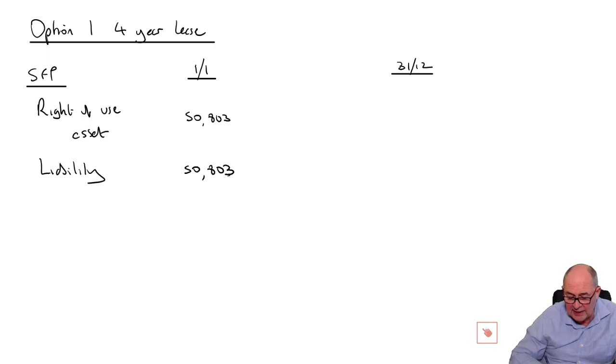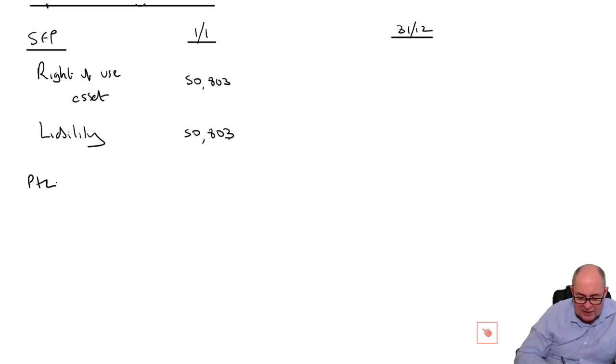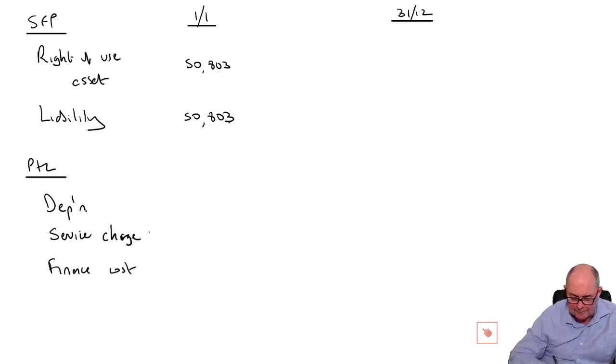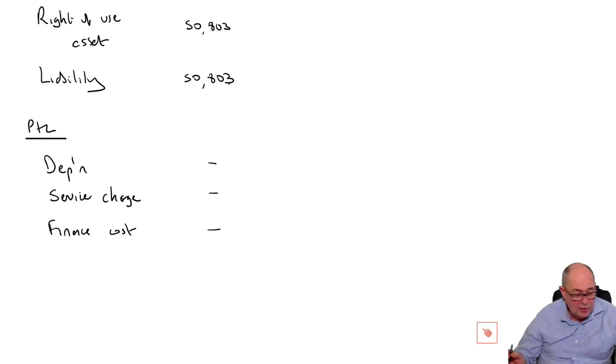In the SoFP, if they go down the leasing route, the long-term lease route, they'll be recognizing a right of use asset, which would be part of non-current assets, and a lease liability. No calculations. It tells us that the actual present value of the lease payments is 50,803. By the time you get to the end of the year, you've got the profit and loss. In the profit and loss, you would normally expect to see depreciation and a finance cost. In addition, these are cars. There's also a service cost.